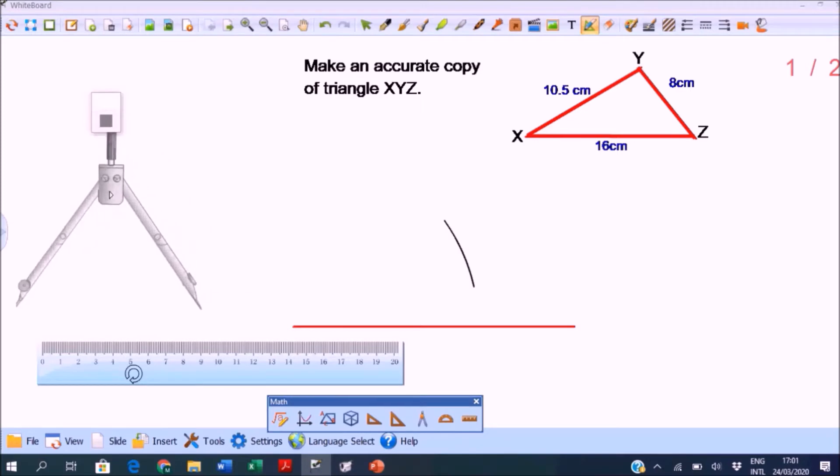Next draw the 8 centimeter side. Open your compass to 8 centimeters, make sure this is 8, then put your compass on the other end of the line and draw an arc intersecting the first arc that we have drawn.